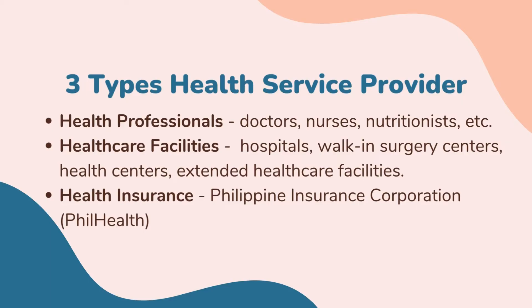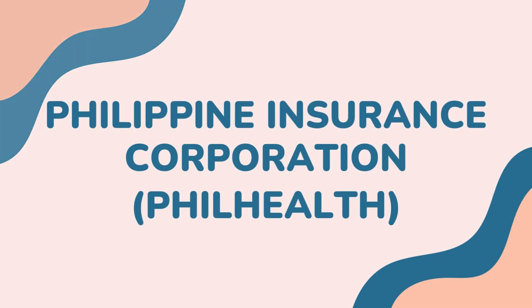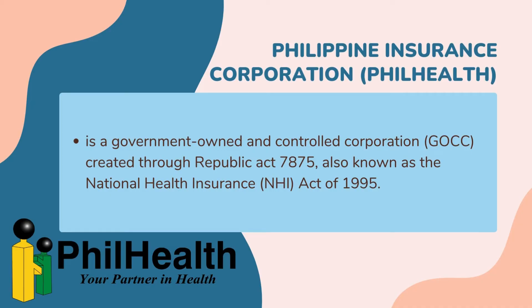The third type is health insurance — a financial agreement between an insurance company and an individual or group for the payment of healthcare costs. A common example here in the Philippines is PhilHealth, or the Philippine Health Insurance Corporation. PhilHealth is a government-owned and controlled corporation created through Republic Act 7875, also known as the National Health Insurance Act of 1995. It aims to provide health insurance coverage for all Filipinos and ensure affordable, acceptable, available, and accessible healthcare services for all citizens of the Philippines.